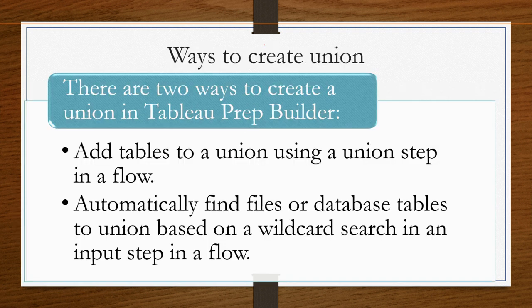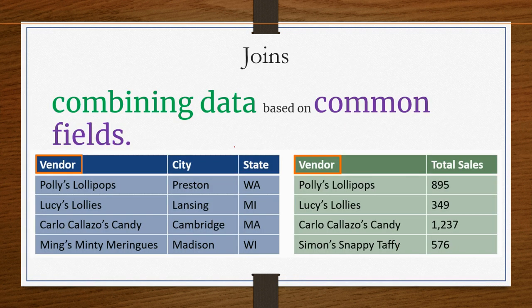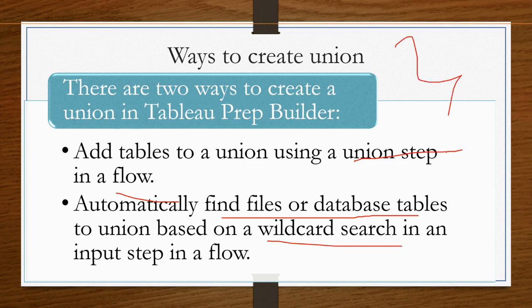There are two ways to create a union in Tableau Prep Builder, which we will see in a demo. You have a wildcard union, and you can also perform a separate union step. You can add a union step in the flow, or automatically find database tables using a wildcard search. That is all about union.